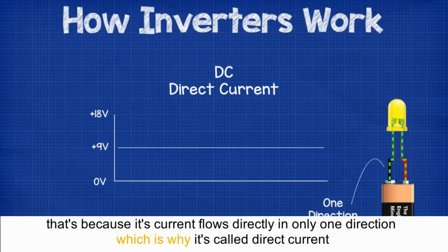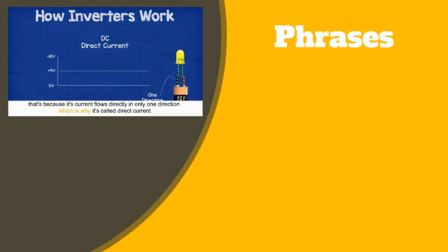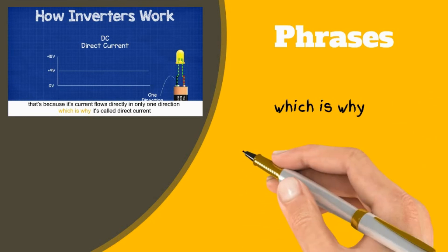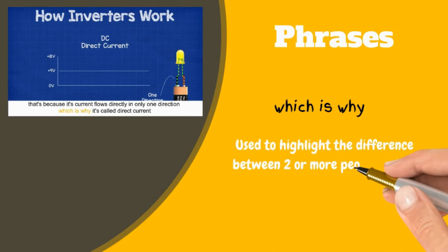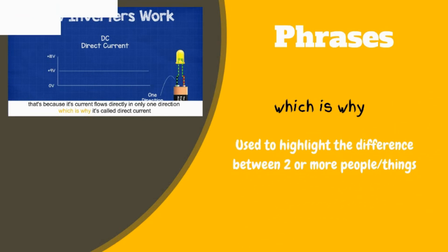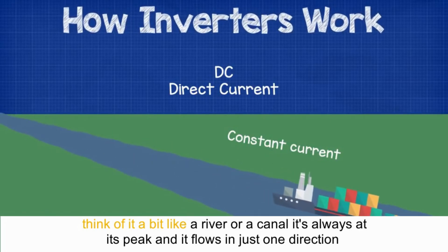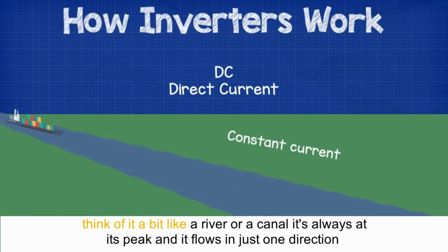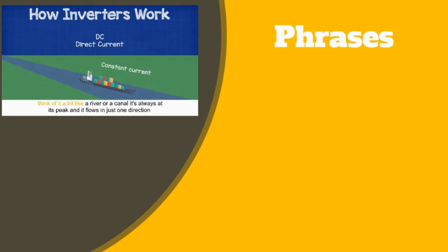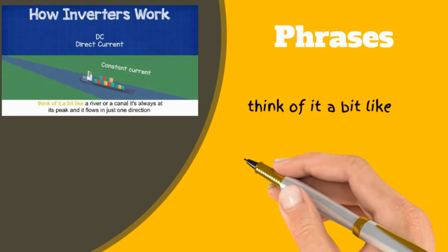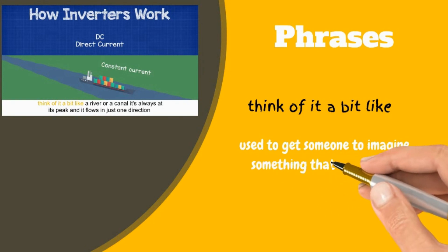That's because its current flows directly in only one direction, which is why it's called direct current. 'Which is why' — this is used to highlight the difference between two or more things. Think of it a bit like a river or a canal — it's always at its peak and it flows in just one direction. 'Think of it a bit like' — this is used to get someone to imagine something that is the same.